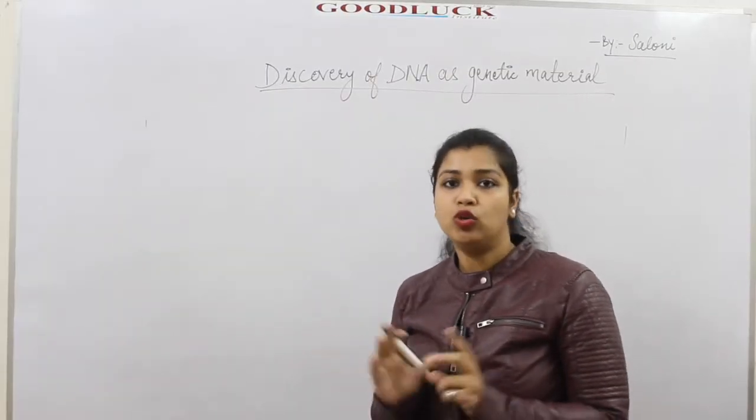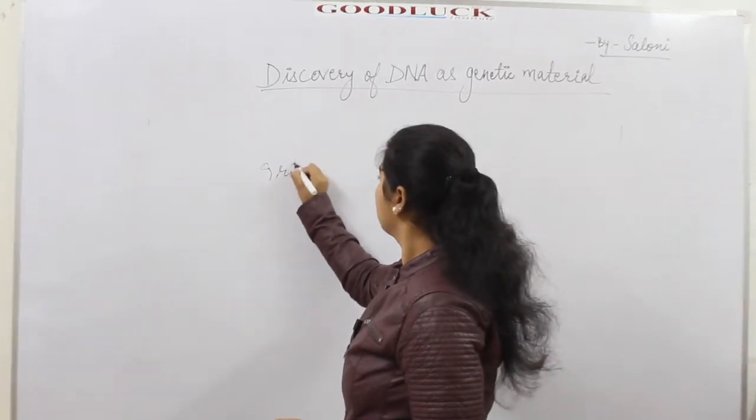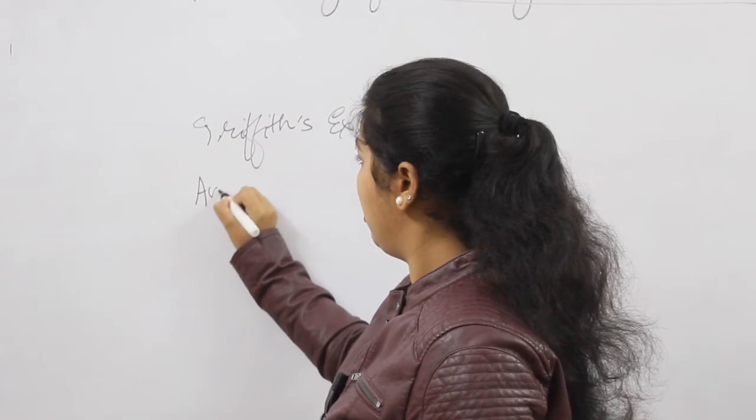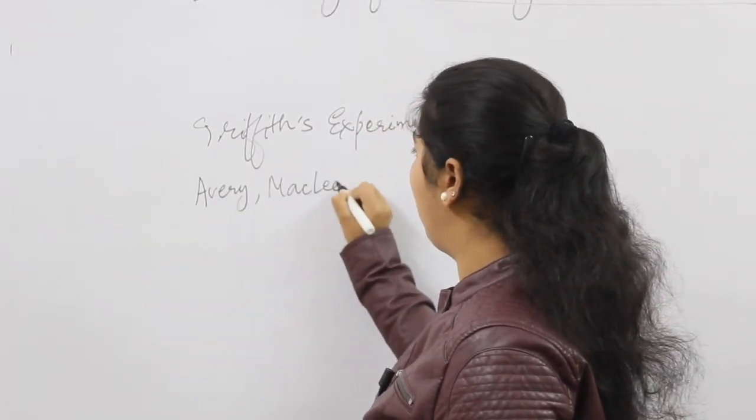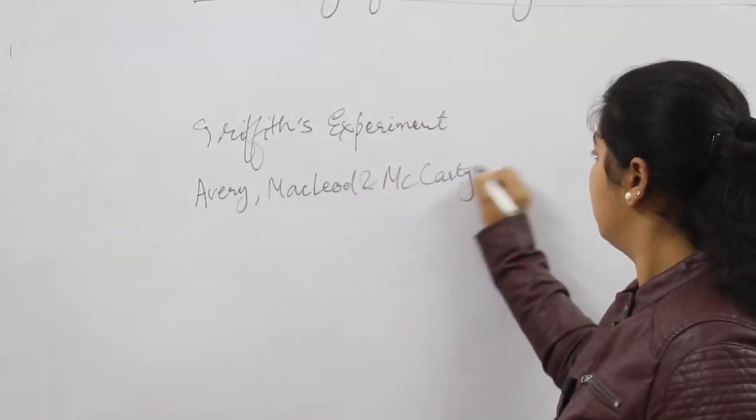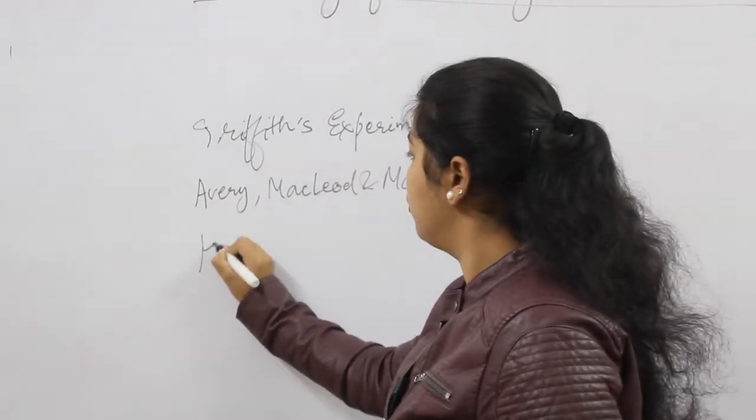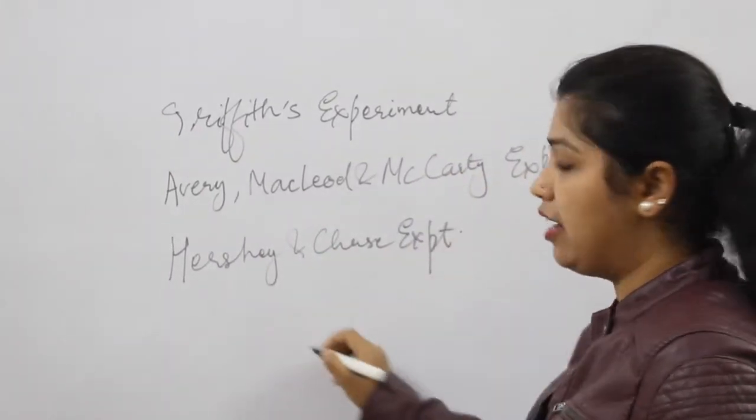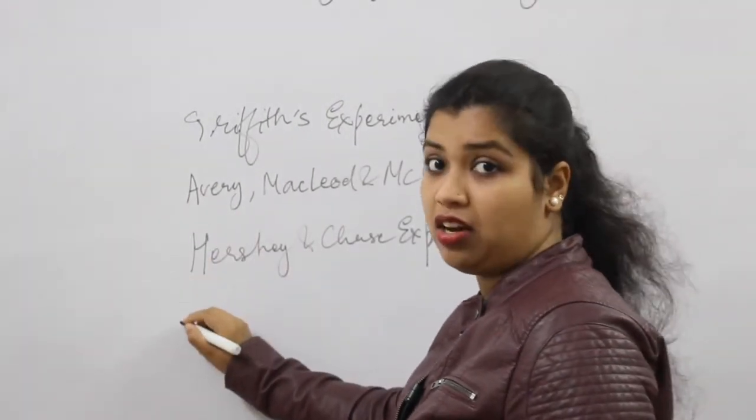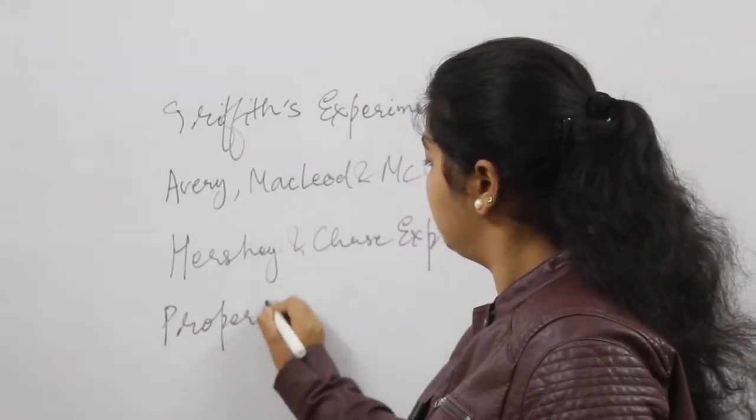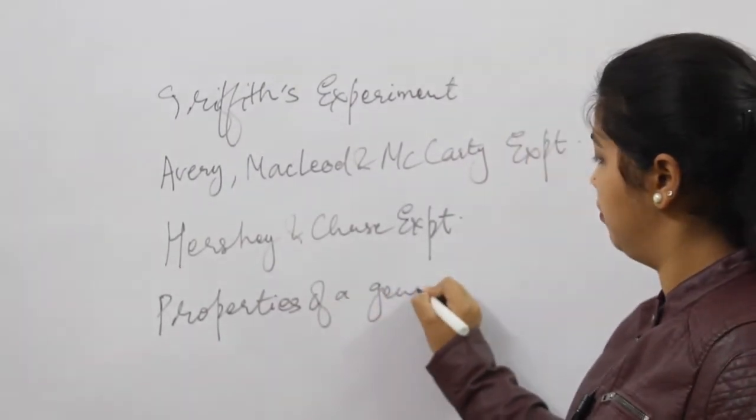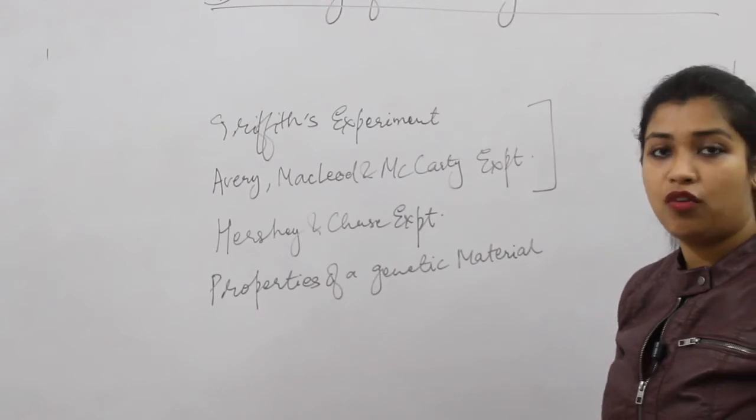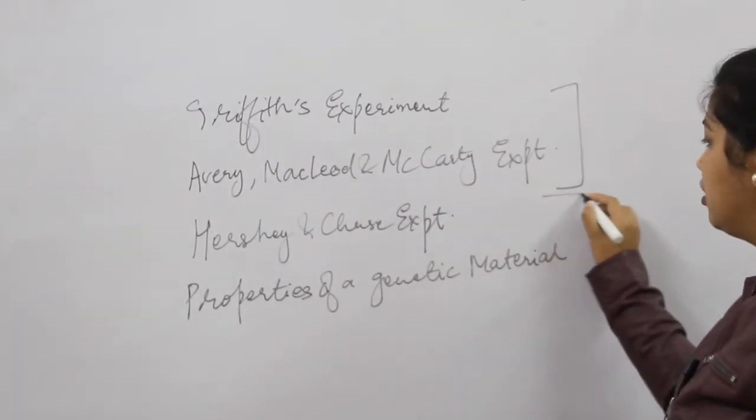I will be dividing this video into two parts. First, there is Griffith's experiment. Then we have the experiment of Avery, MacLeod and McCarty. Then I have the experiment of Hershey and Chase. Based on these three experiments, we will be discussing the properties of genetic material. In this video I will be covering the first two experiments, and in the next video I will cover the remaining topics.